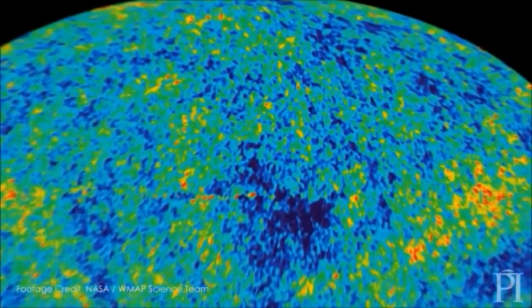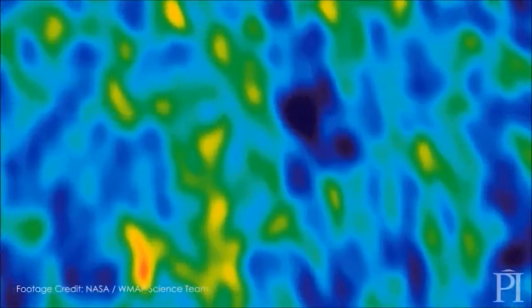You just simulate that very early time of inflation. So you're simulating the first 10 to the minus 30-something seconds of the universe. The bruise that that collision leaves is imprinted on the density in the very early universe.